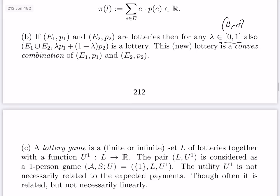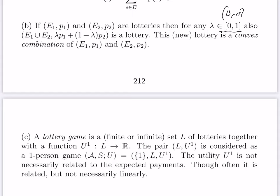A lottery game is a finite or infinite set L of lotteries together with a utility function u₁ for one player from L to the real numbers. This pair — lottery set and utility function — is considered a one-person game. A priori the utility is not necessarily related to the expected payment π(l), but often it is related, though not necessarily linearly. How it is related tells us whether the player is risk-averse, risk-neutral, or risk-loving.